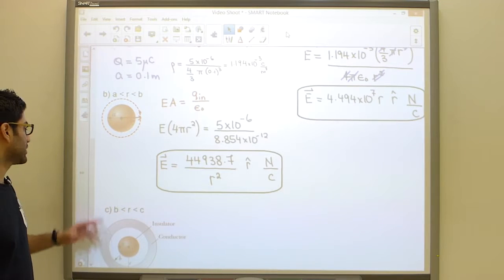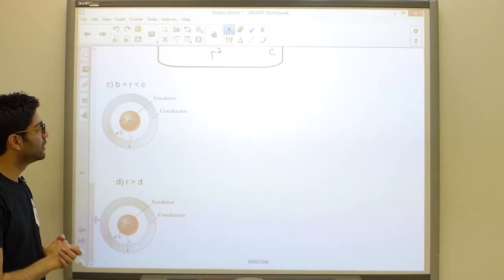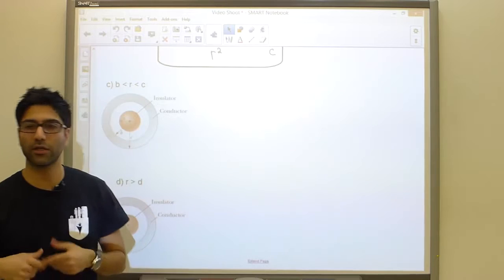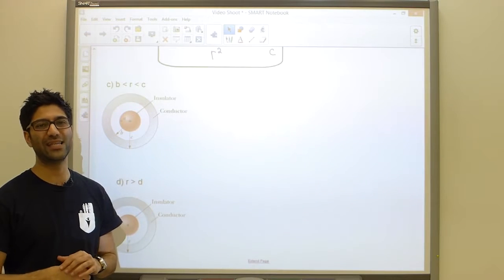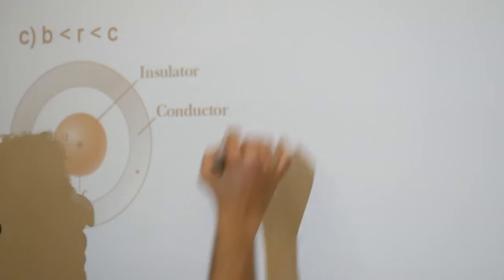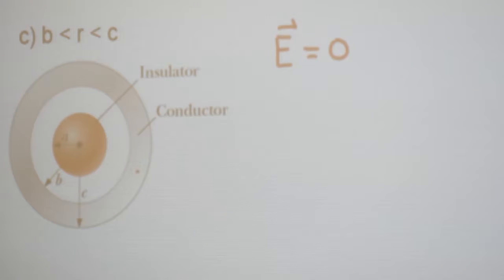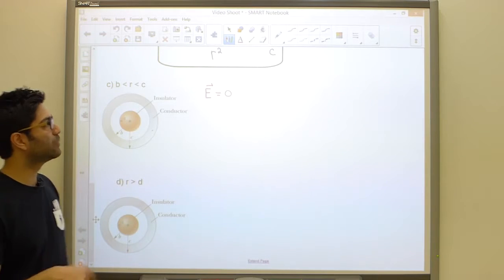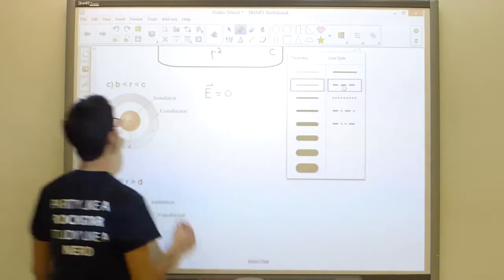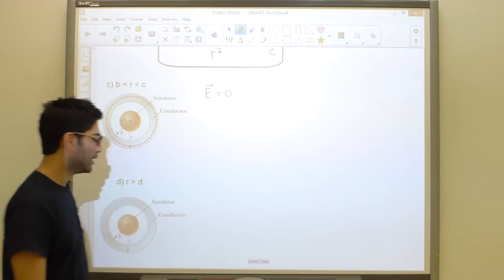The next region is somewhere inside the conductor, between radii b and c. We already know from the properties of conductors that the electric field inside a conductor is zero. However, let's see what Gauss's law gives us if we create a Gaussian surface somewhere inside this conductor and calculate the electric field.